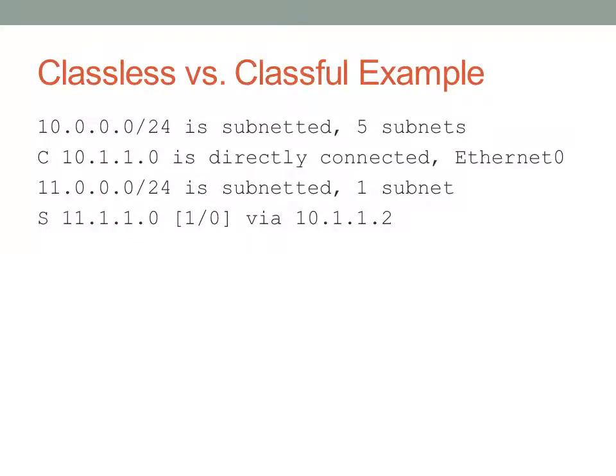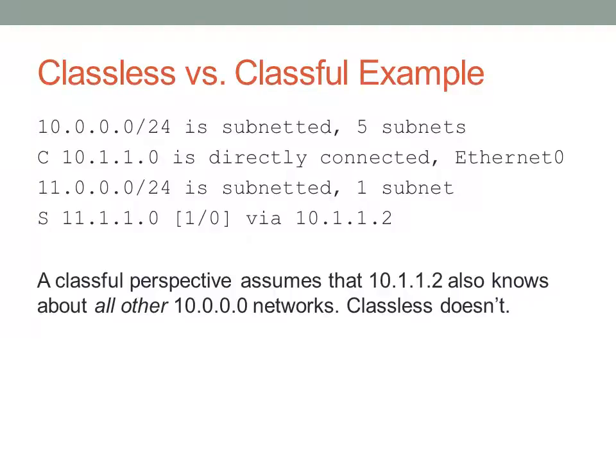Here's an example of a routing table that has been installed. You can see there's 10.1.1.0 and 11.1.1.0 - there are only two routes. One of them is a directly connected route and one of them is a static route. From a classful perspective, it assumes that 10.1.1.2 - which is the next hop to get to 11 - also knows about all of the other 11 networks. The classless approach does not make that assumption.